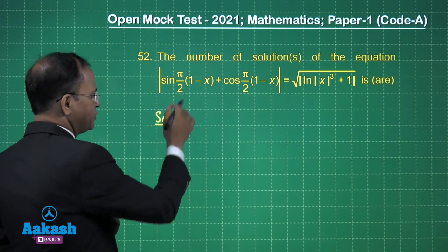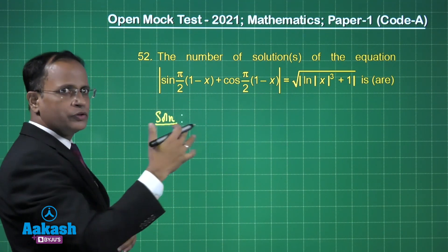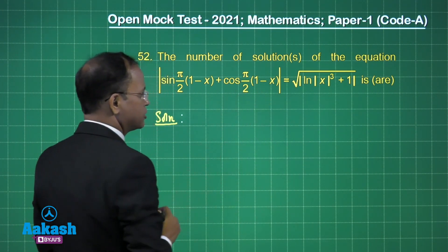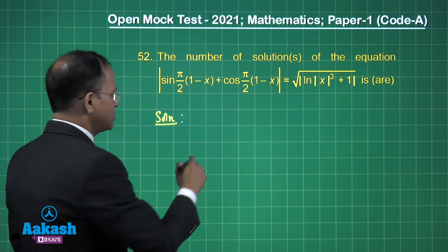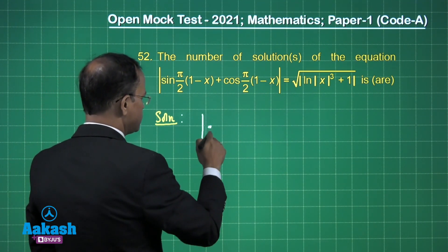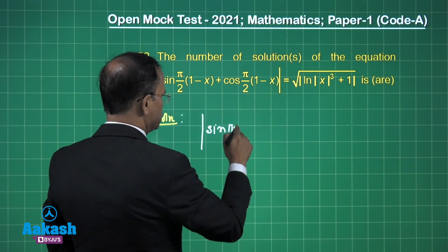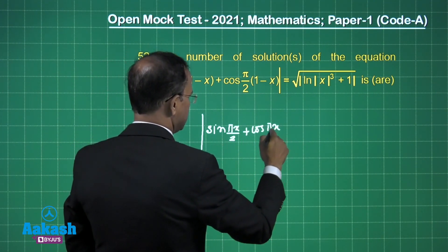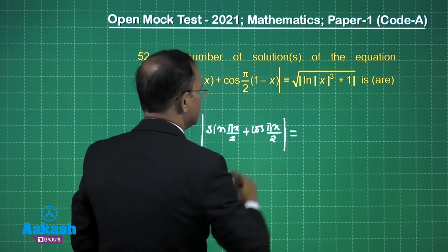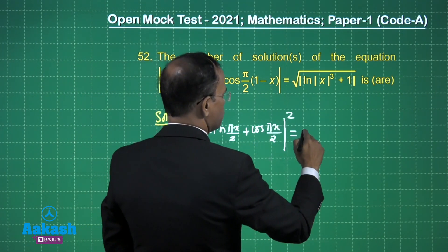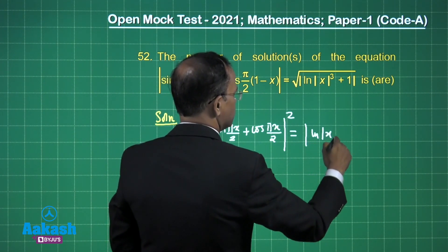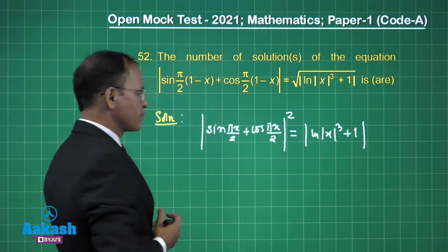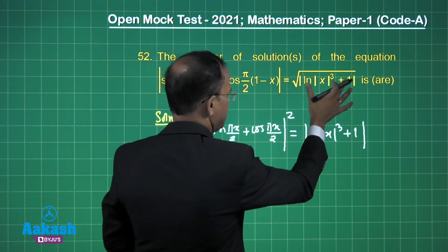Now, sin(π/2 − θ) is always equal to cos θ. So for our case, π/2 · (1−x) gives us cos(πx/2). And cos(π/2 − θ) equals sin θ. So we get sin(πx/2) plus cos(πx/2). If you square it — the mod is removed once we square it.